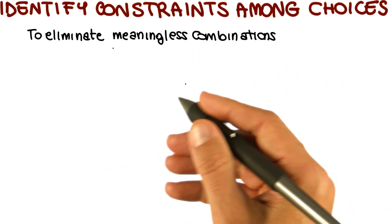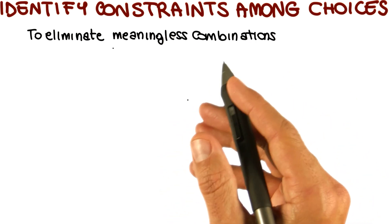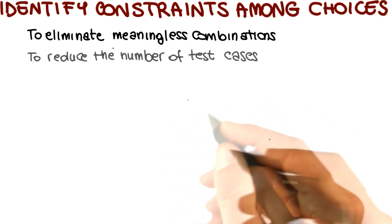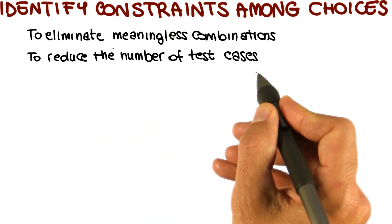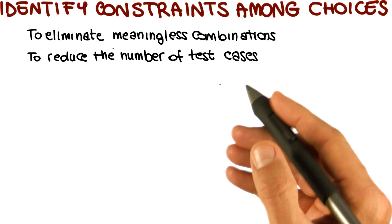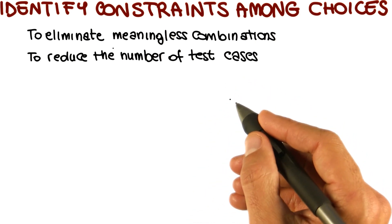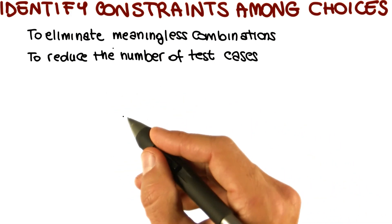If you remember, for example, we had the case in which we were trying to create a string with a size less than zero, which doesn't make any sense. Very importantly, we also do that to reduce the number of test cases. Every time we constrain one of the possible choices, we eliminate possible test cases. We can use it to keep under control the number of tests that we generate.